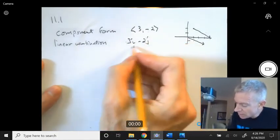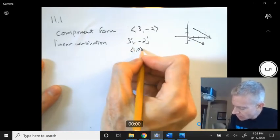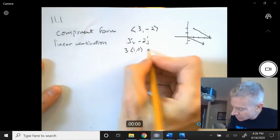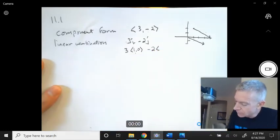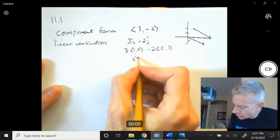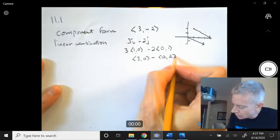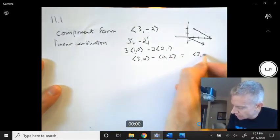Standard unit vectors are the i vector <1, 0>. So 3 times i minus 2 times the standard unit vector <0, 1>. And as you can see when you multiply this out, <3, 0> minus <0, 2>, you get the vector <3, -2>.